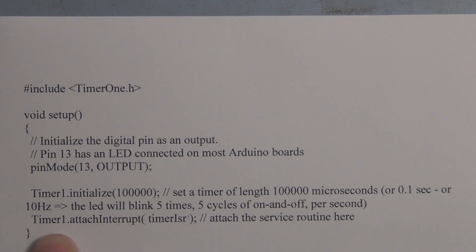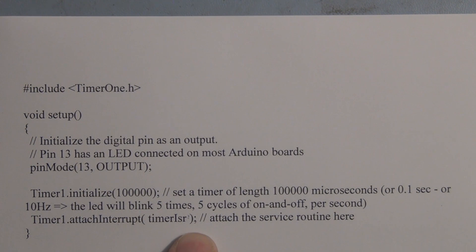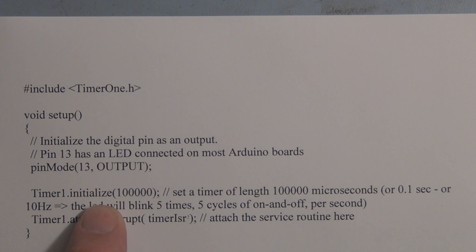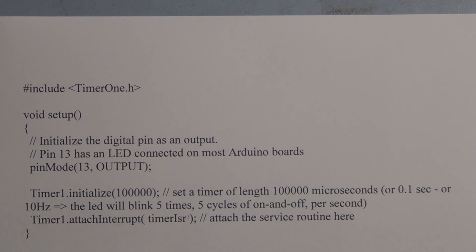Here we have Timer1.attachInterrupt, and this is the function that gets run on each interrupt. Unlike the hardware interrupt where we have three arguments—the interrupt that we're using, the function, and the state change—whether it's rising or falling or high or low, here we just specify the function that gets called at the interval that we set up with this Timer1.initialize.